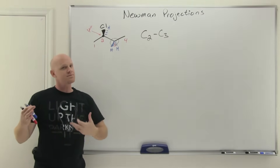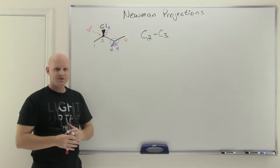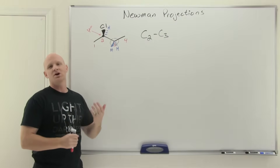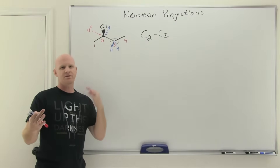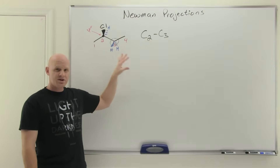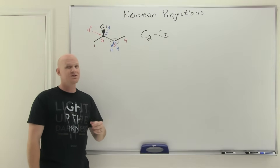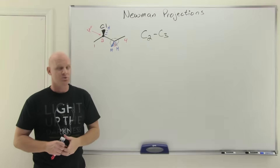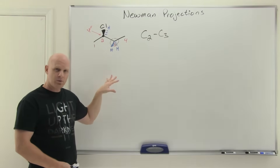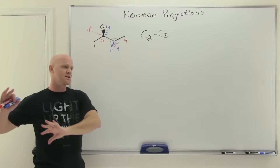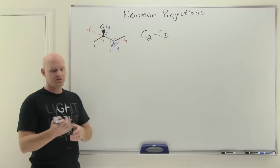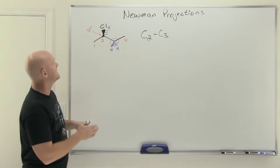We could technically draw all six of the major conformations — and keep in mind there's an infinite number of possible conformations, but we usually only draw the three eclipsed and the three staggered. However, the question on the test is usually just going to have you draw the lowest energy — that's the question at hand here. Knowing we're looking for the lowest energy conformation, we can just ignore all the eclipsed conformations and just draw the staggered ones.